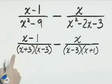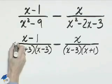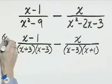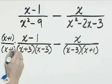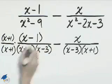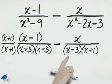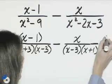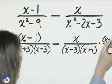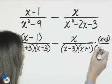This first fraction needs the x plus 1, so we will multiply the numerator and denominator by x plus 1. The second fraction needs the x plus 3 in its denominator, so we'll multiply x plus 3 for both the numerator and denominator.